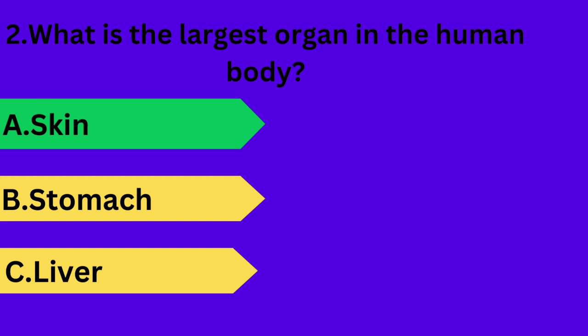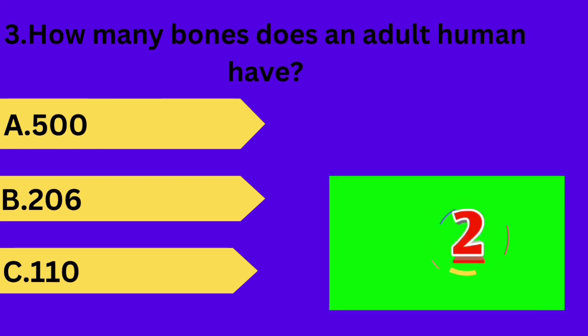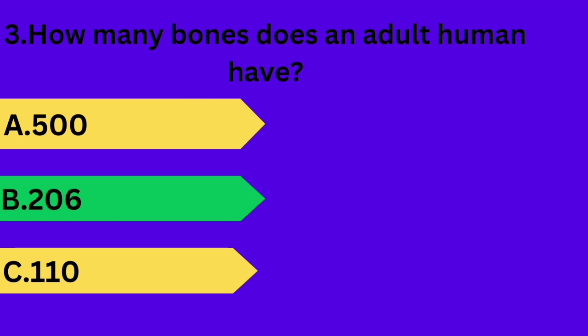And next question is: how many bones does an adult human have? Option A: 500. Option B: 206. Option C: 110. Your time starts now. Answer is option B: 206.